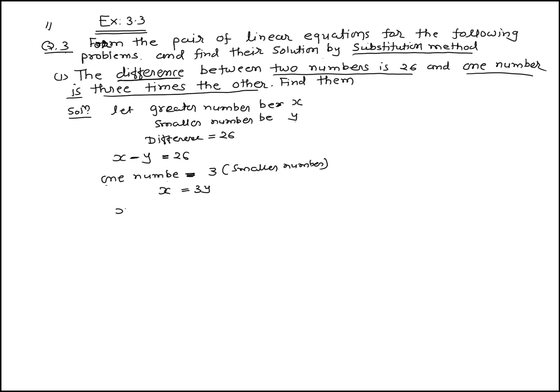Therefore, x minus 3y equals zero — this is equation number two. Equation number one: the greater number minus the smaller number equals twenty-six. The greater number is three times the smaller number. Now substitute.